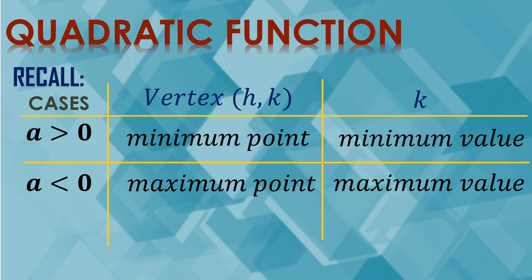Let us have a review of the quadratic function first before we proceed to the application. We actually have two cases: when a is greater than 0 and when a is less than 0. Remember that a is the numerical coefficient of x squared. We say that the vertex hk becomes the minimum point when a is greater than 0 because the graph opens upward, so the minimum point is the vertex.